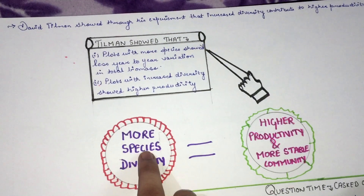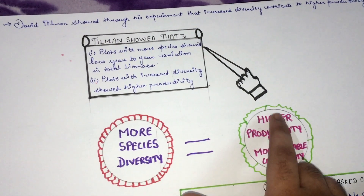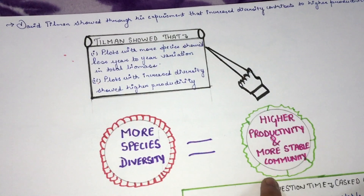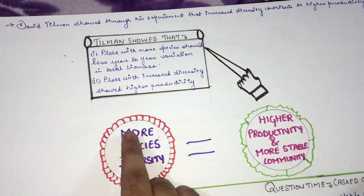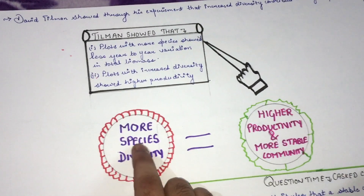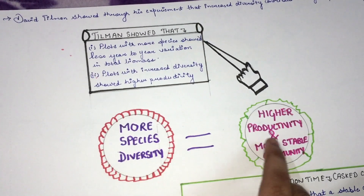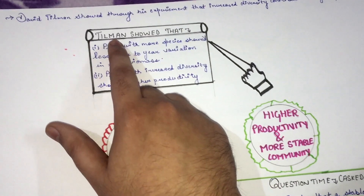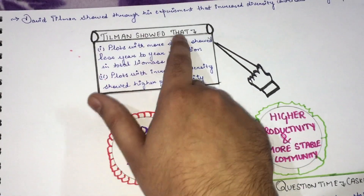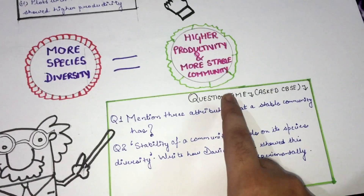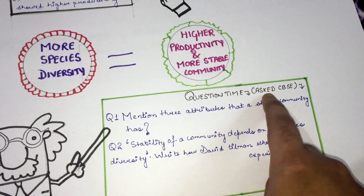We conclude that more species diversity equals higher productivity and a more stable community. The scientist David Tilman showed this, and it is given in the NCERT. Two questions are commonly asked on this topic, and it is also asked in CBSE exams.